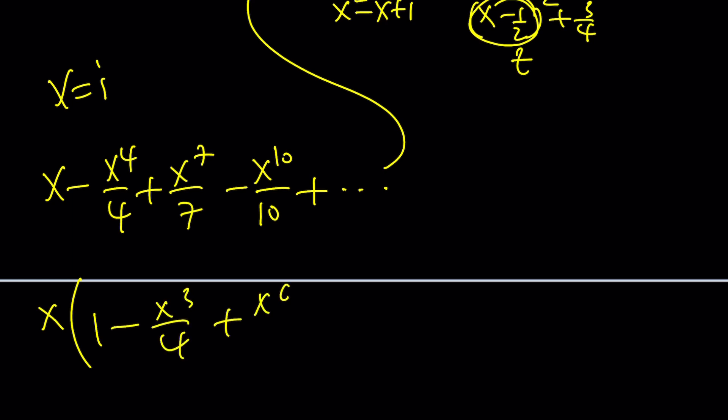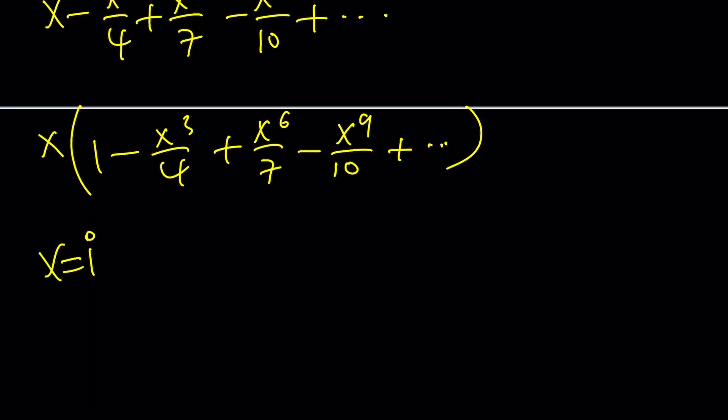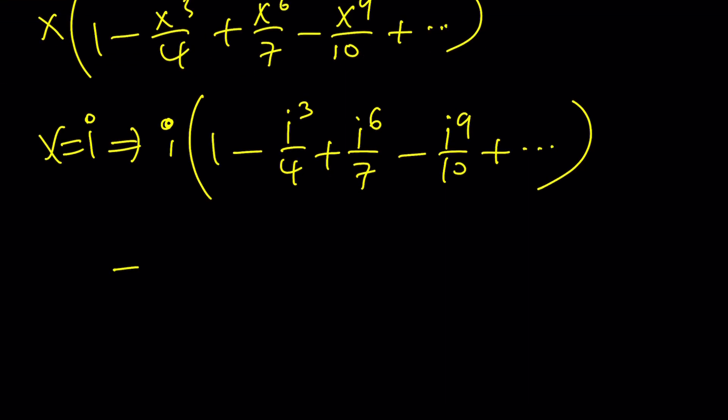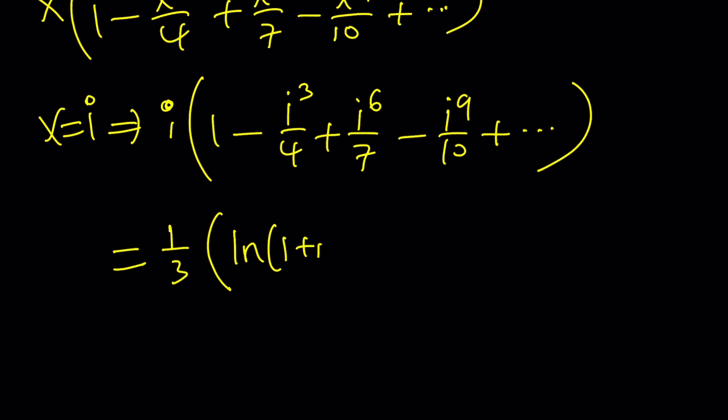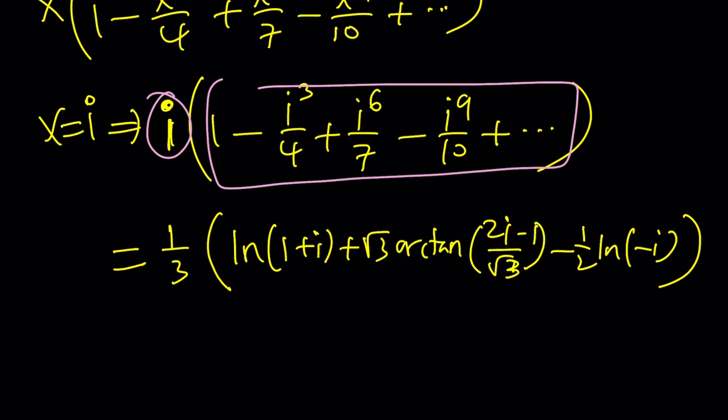Because our sum starts with one, not with X or I. You see what I'm talking about? And if you go ahead and replace X with I here, you're going to get I times one minus I to the third over four, plus I to the sixth over seven, minus I to the ninth over ten, so on and so forth. And you're going to have an I here. And guess what? This is going to equal when you replace X with I here everywhere, including the one third, you're going to have something like this. One third times ln one plus I plus square root of three times arc tangent two I minus one divided by root three minus one half of ln negative I. Guess what? This is multi-valued, so you got to be careful. But at the end, to find the sum you're looking for, you're going to need to divide by I, or as I do it, multiply by negative I, because it's better.